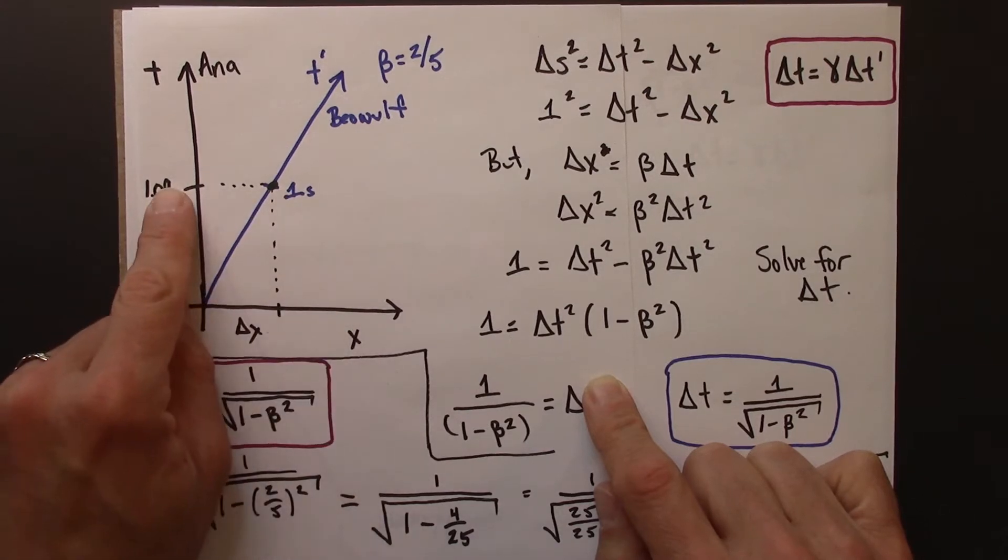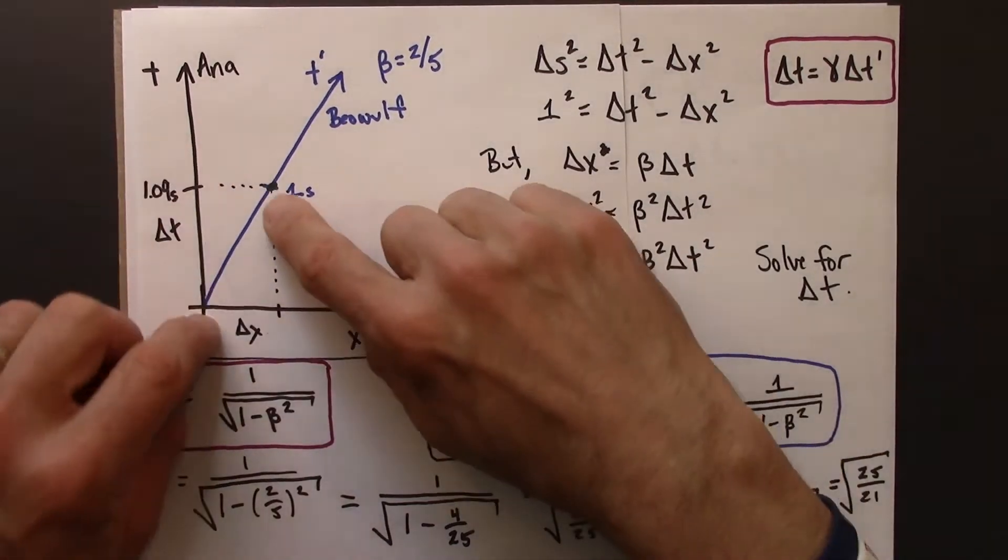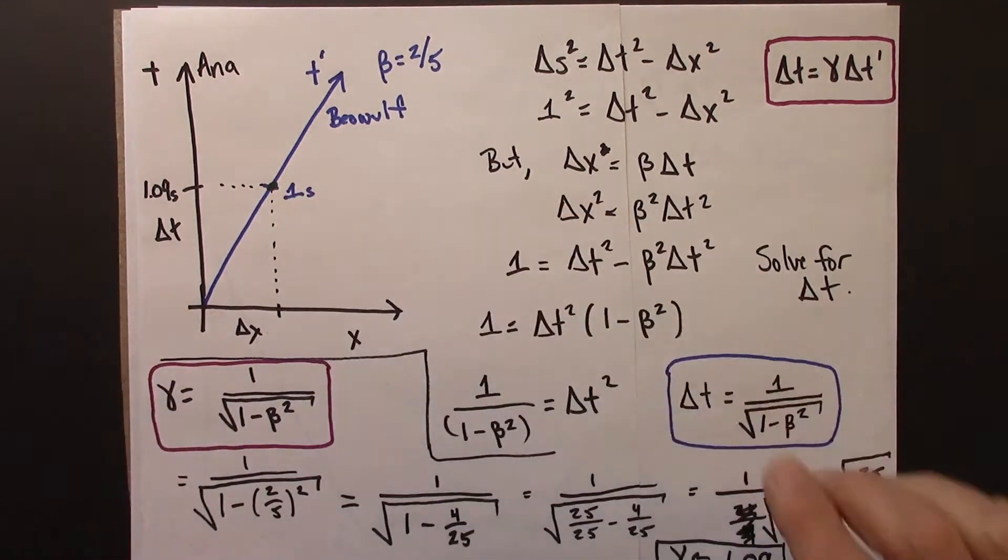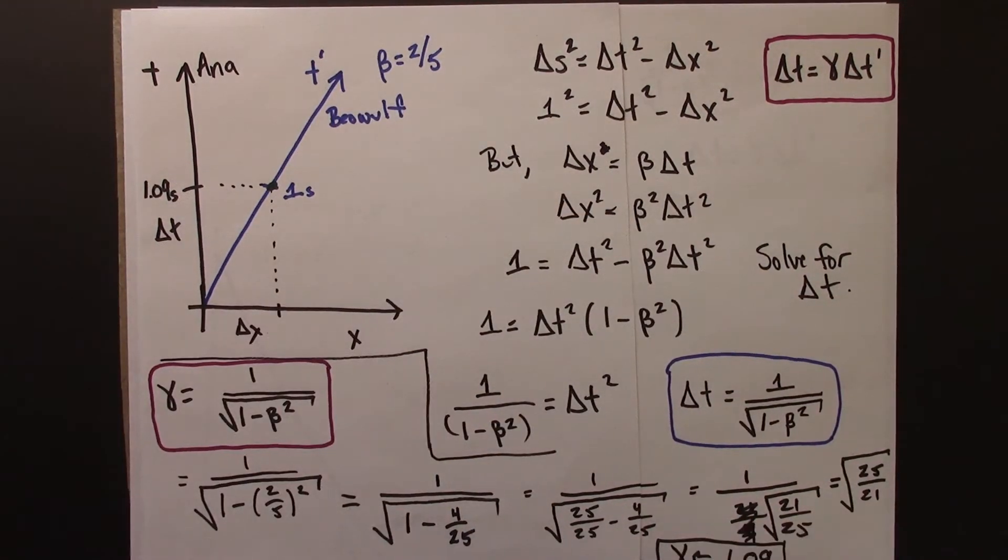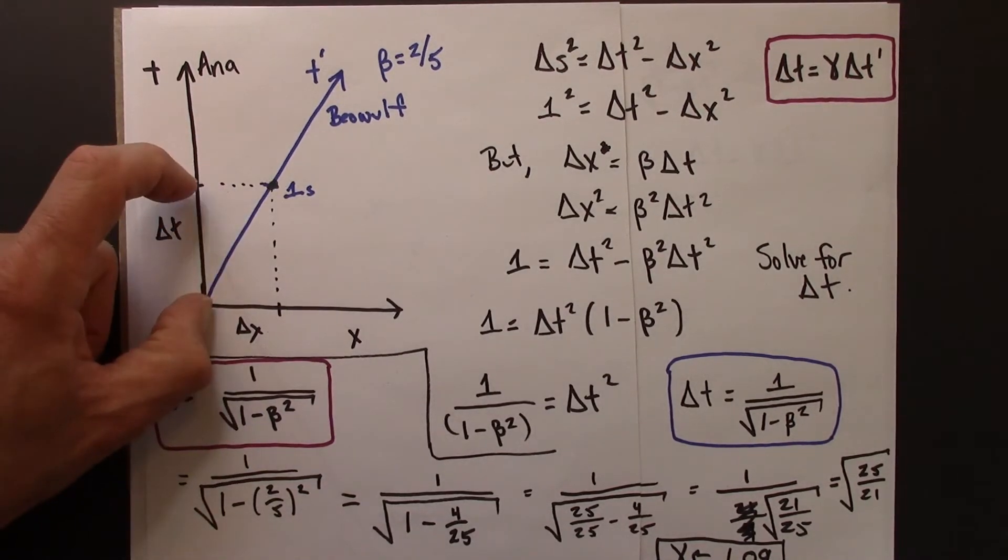Why 1.09? Because delta t prime is one. The gamma factor for this example, where beta is 2/5, is about 1.09. And so 1 times 1.09 gives that.